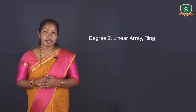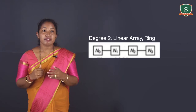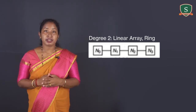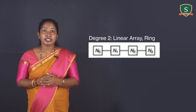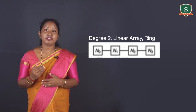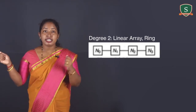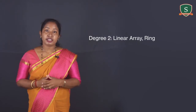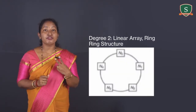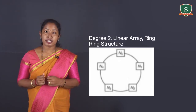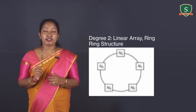Degree 2: Linear array or ring architecture. A linear array is a one-dimensional network in which n nodes are connected by n-1 links in a line. All internal nodes have degree 2 and the terminal nodes have degree 1. The linear array has each node connected with two neighbors. The linearity of this structure comes from the fact that the first and last nodes are not connected. Another networking configuration with a simple design is a ring structure. A ring network has a degree of 2, similar to the linear array, where each node is connected to two of its neighbors, but the first and last nodes are also connected to form a ring.